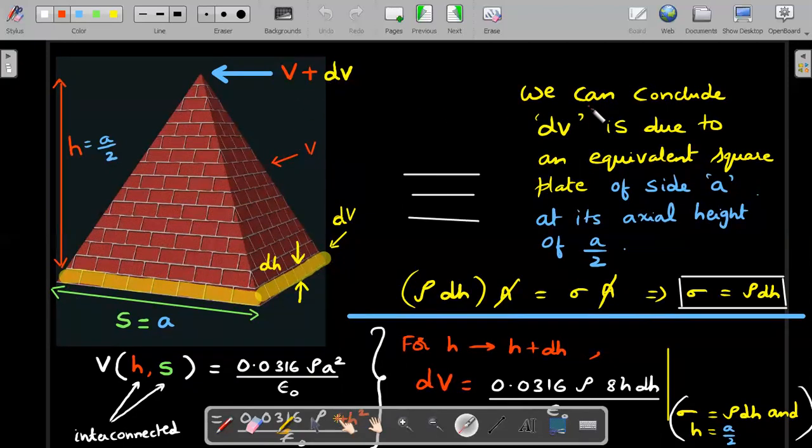We can conclude dV is due to an equivalent square plate of side a at its axial height of a/2. Now if that equivalence has to be written, then the charge in this three-dimensional figure should be equivalent to the charge in the two-dimensional diagram. The charge here would be ρ into dH height into base area. If it has to be converted into a two-dimensional σ plate, then σ into area should be the charge. So in my final answer of differentiation, I would replace the ρ dH with a σ of equivalent plate.